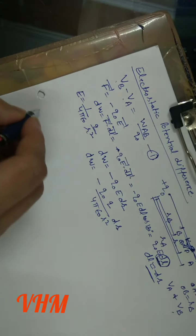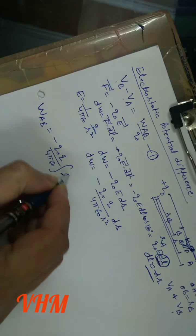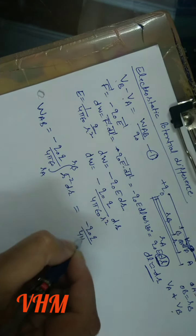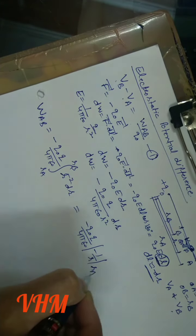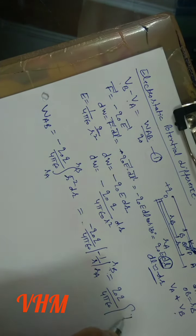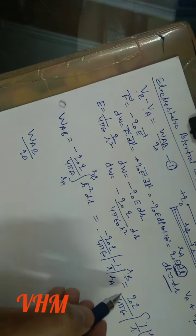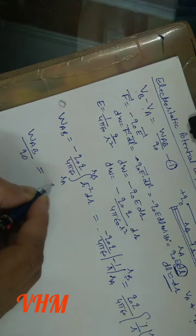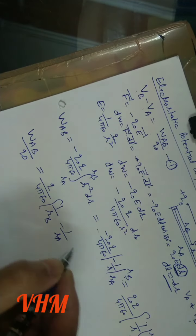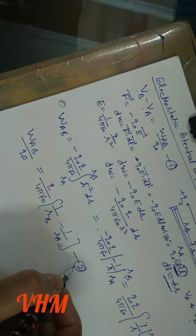To calculate the total work done from A to B, we integrate: minus Q₀Q/(4πε₀) times [minus 1/R] from R_A to R_B. The double negative gives plus Q₀Q/(4πε₀) times [1/R] from R_A to R_B. So the work done per unit test charge is Q/(4πε₀) · (1/R_B − 1/R_A). This is equation number 2.